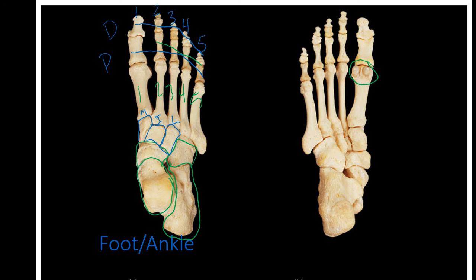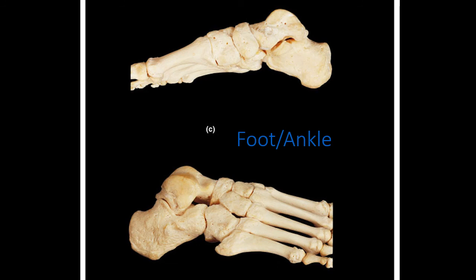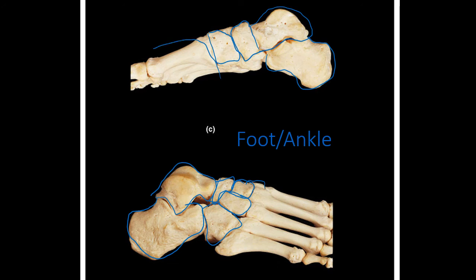From a lateral side view, we can again see the talus — on top of which the tibia sits — the calcaneus, the cuboid, the navicular, and the three cuneiforms: lateral, intermediate, and medial. The talus and calcaneus are visible, as are all the metatarsals and some of the tarsals. That concludes our look at the bones of the skeleton.